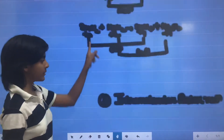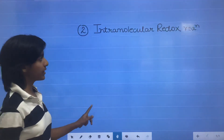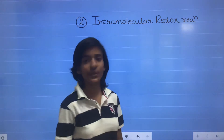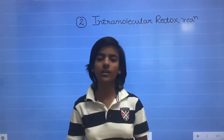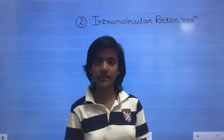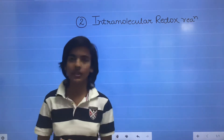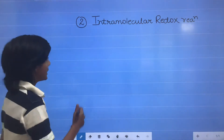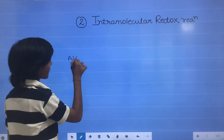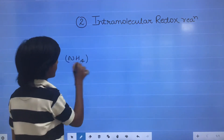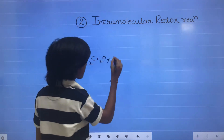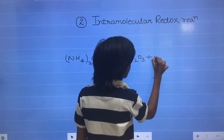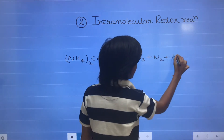The next one is intramolecular redox reaction. Intramolecular redox reaction means the redox reaction which takes place in the same molecule, but different elements undergo oxidation and reduction. For example, ammonium dichromate decomposes to form Cr2O3 plus N2 plus H2O.